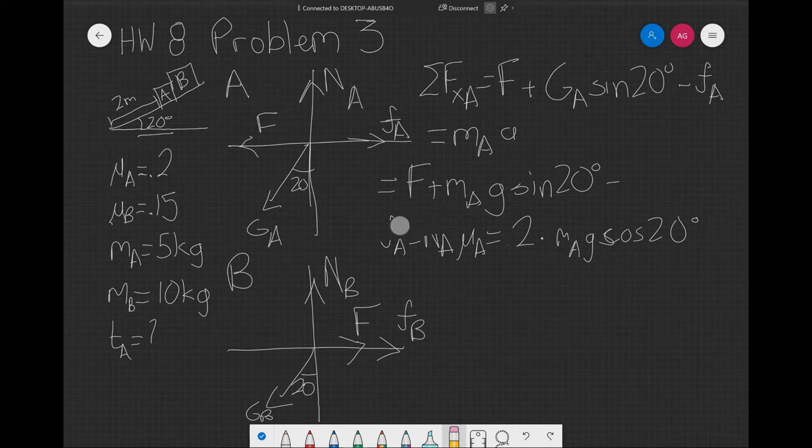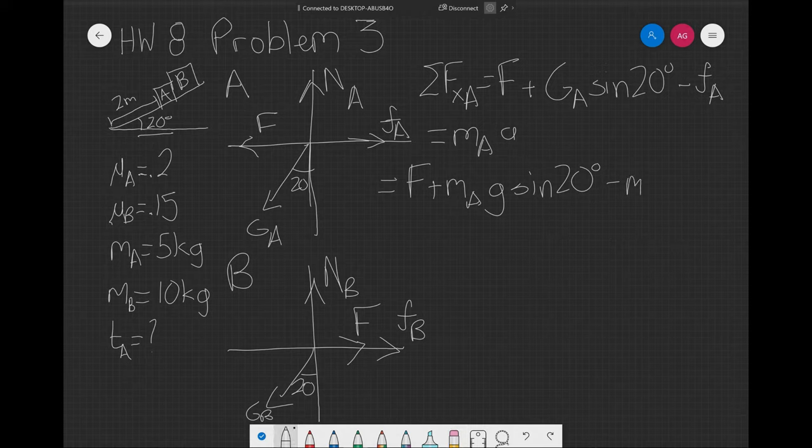And the normal force is equal to the vertical component of gravity, so it's going to be M_A G cosine of 20 degrees. So I'm going to get rid of it here and I'm going to write it in our equation here, so we have M_A G mu_A times the cosine of 20 degrees.